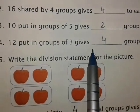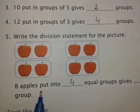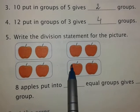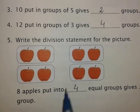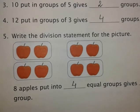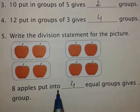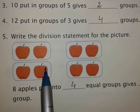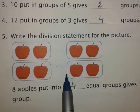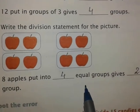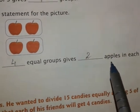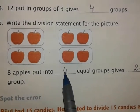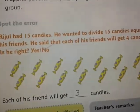Now look at number five. Children, some pictures of apples are given. We can see that there are four groups of apples and two apples in each group. So this can be read as: eight apples put into four equal groups. There are eight apples in total, kept in four groups, so putting them in four equal groups gives two apples in each group. You can see there are two apples in each group and four groups are made.